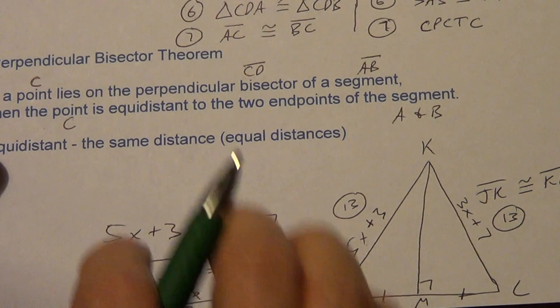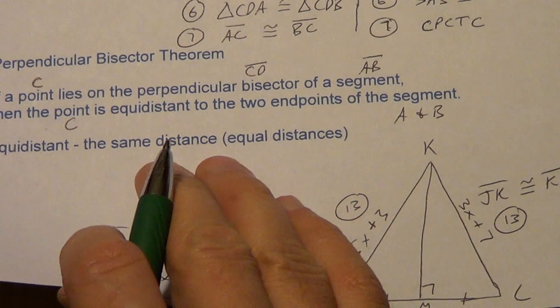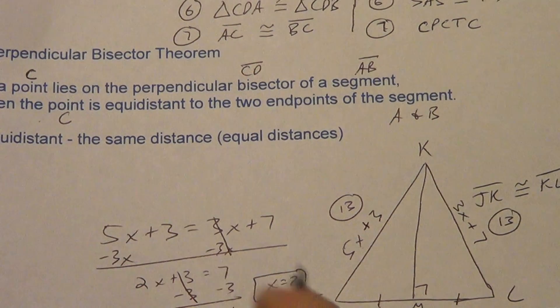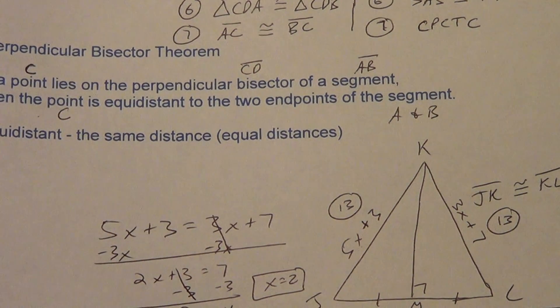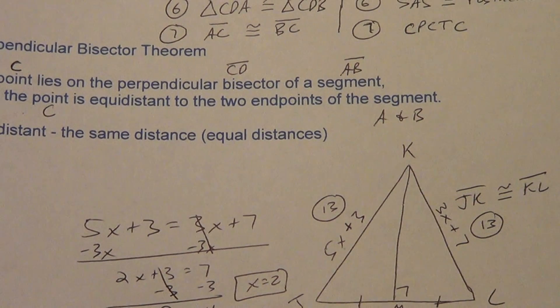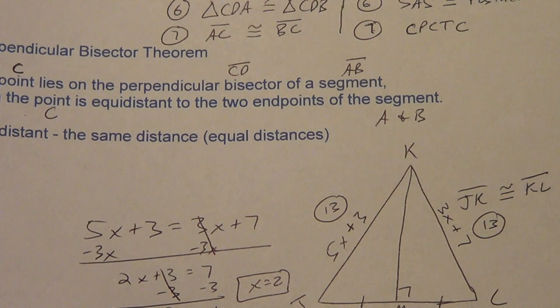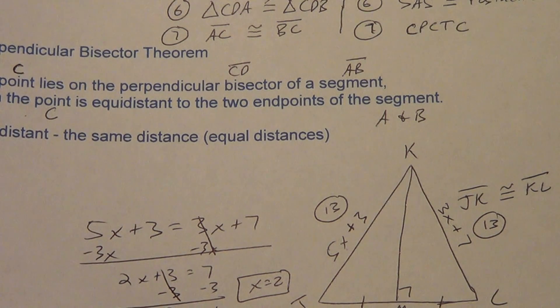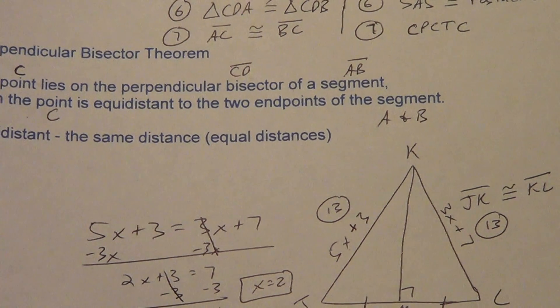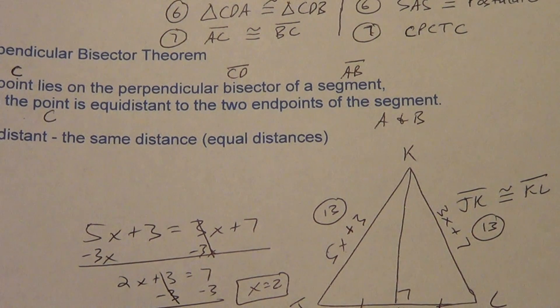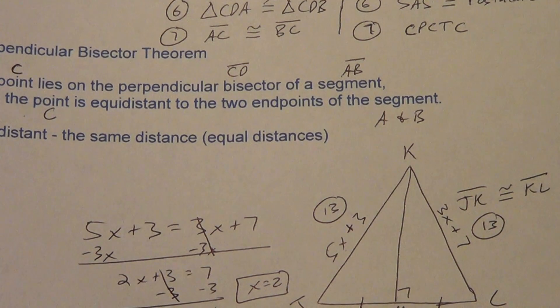That's it for lesson 5.2. Remember, also watch the compass work for perpendicular bisectors, which meet at a point called the circumcenter — that's part of lesson 5.2 as well. That's it for this video, thank you.